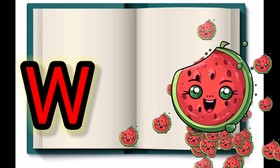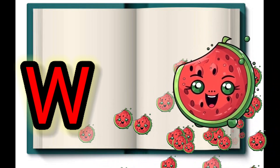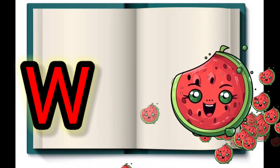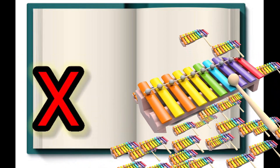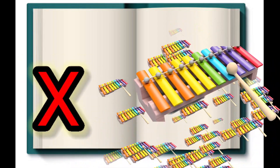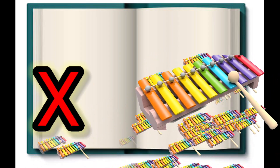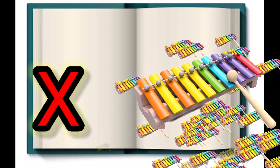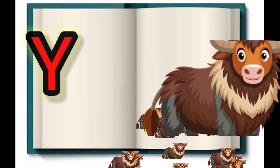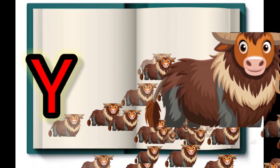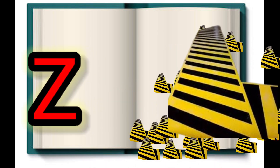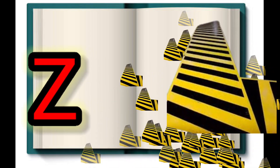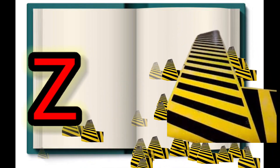WW for Watermelon. X, X for Xylophone. Y, Y for Yak. Z, Z for Zebra Crossing.